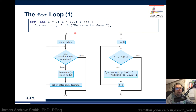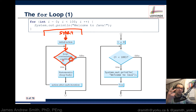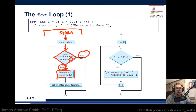There's another way of visualizing this using flowcharts. In the general flowchart, we start at the top, go to an initial action, then down into a decision diamond — a question with two possible answers: true or false. If the answer is true, we execute the statement inside the loop body. If it's false, we skip to the end. After executing the loop body, we take an action after each iteration, then loop back up to the decision diamond.